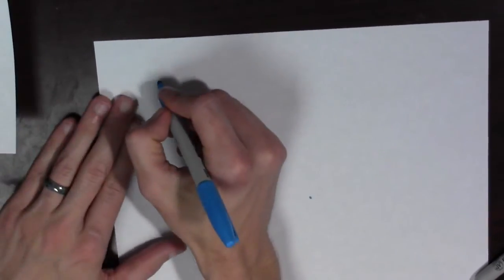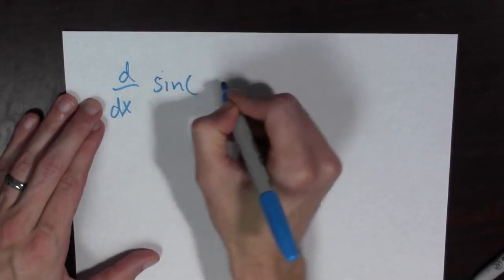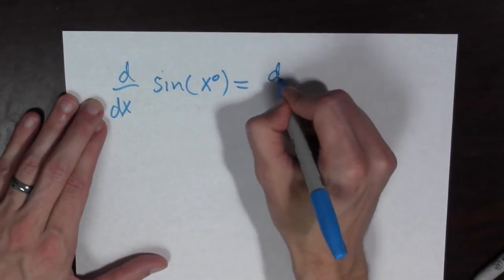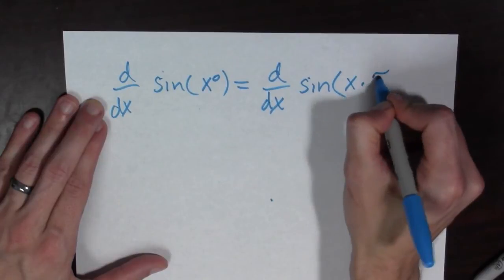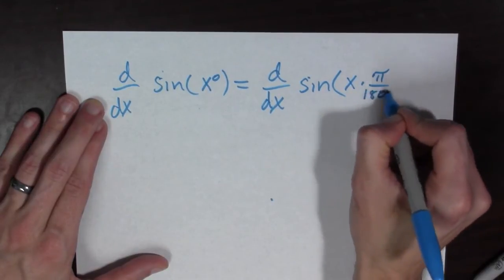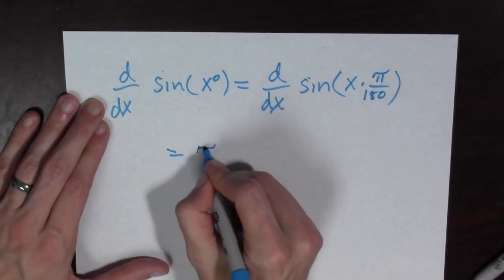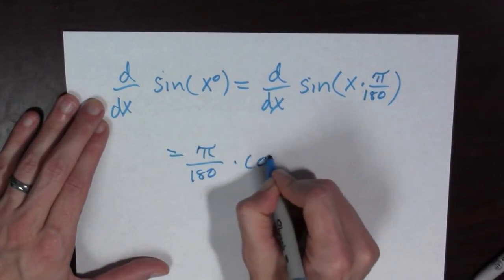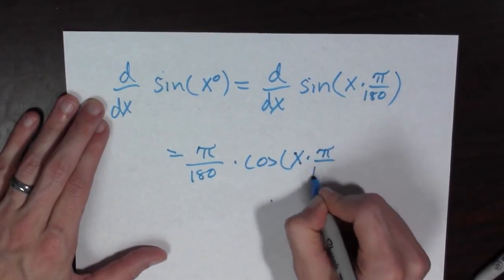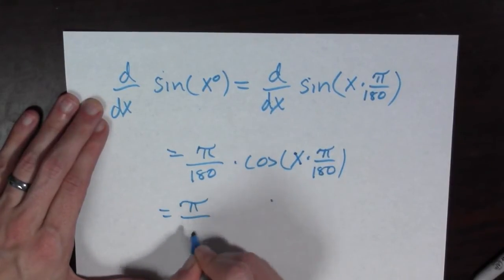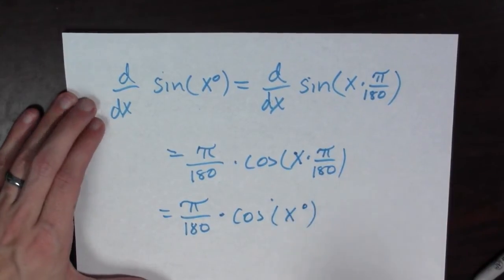So if we have derivative d over dx of sine of x degrees, this is equal to d over dx of sine of x times pi over 180, which is equal to, aha, by the chain rule, pi over 180 times cosine of x times pi over 180, which is equal to pi over 180 times cosine of x degrees.